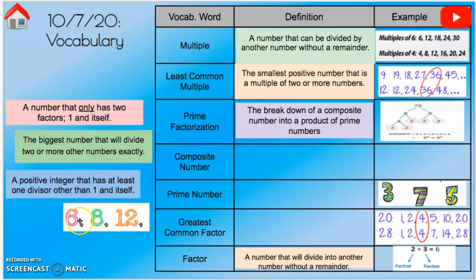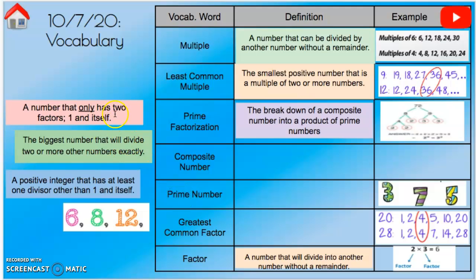A composite number is a number that has more than one factor pair — more than just one and itself. Prime means it only has one and itself — think 'prime time' — it's just one and itself. Composite means it can have additional factor pairs beyond one and itself.